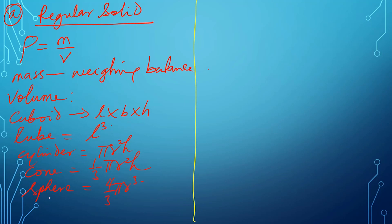If it is a hemisphere, which is half a sphere, the volume is two-thirds pi r cubed. So depending on the shape of the solid, your volume can be calculated. Then you get your density by dividing the value of the mass by the value of the volume obtained.